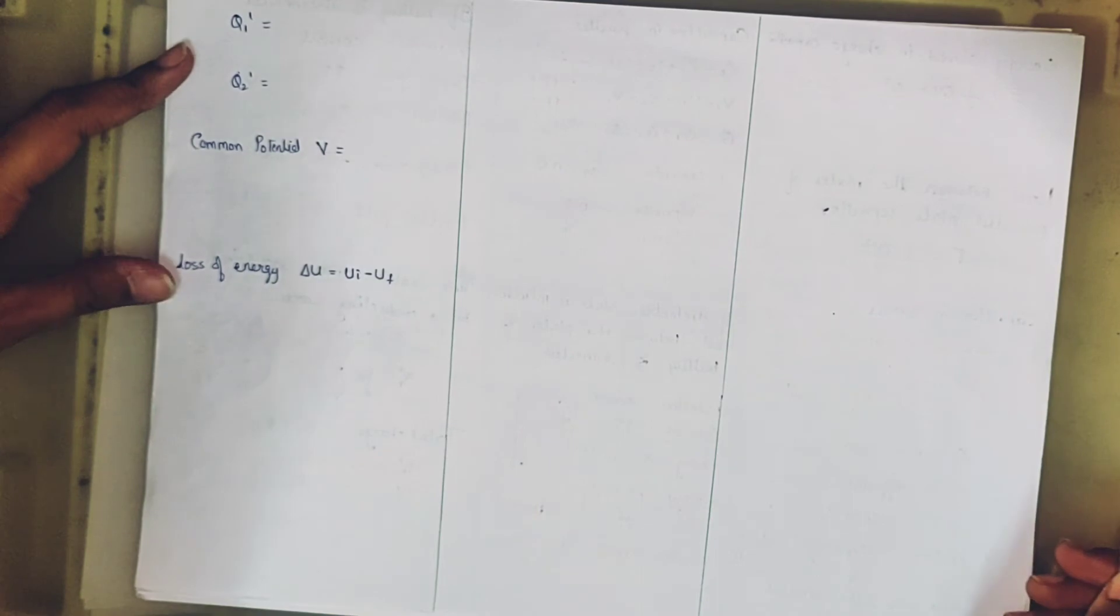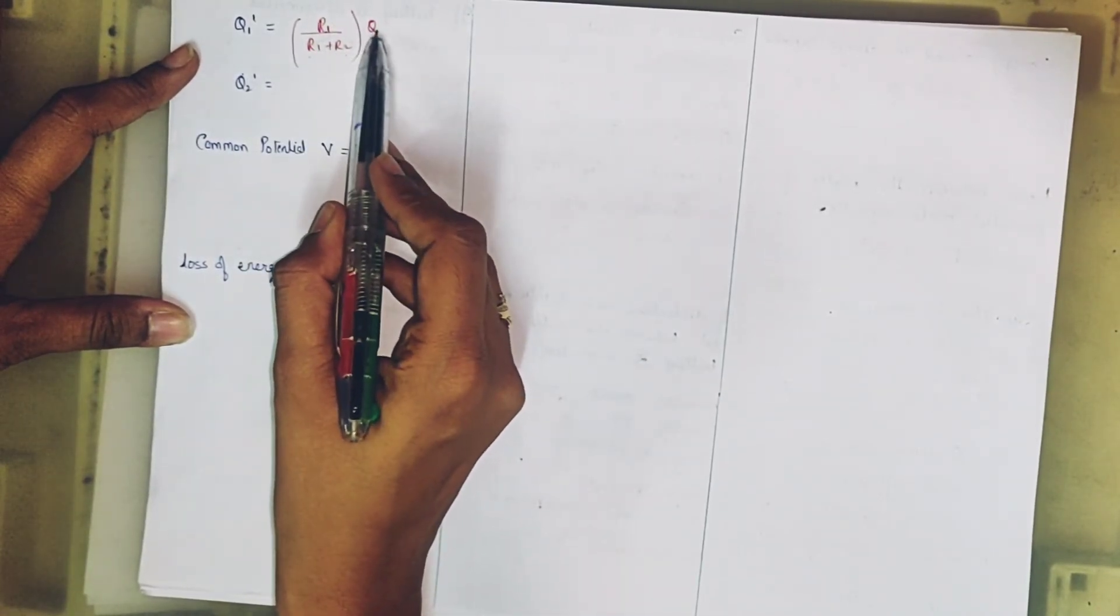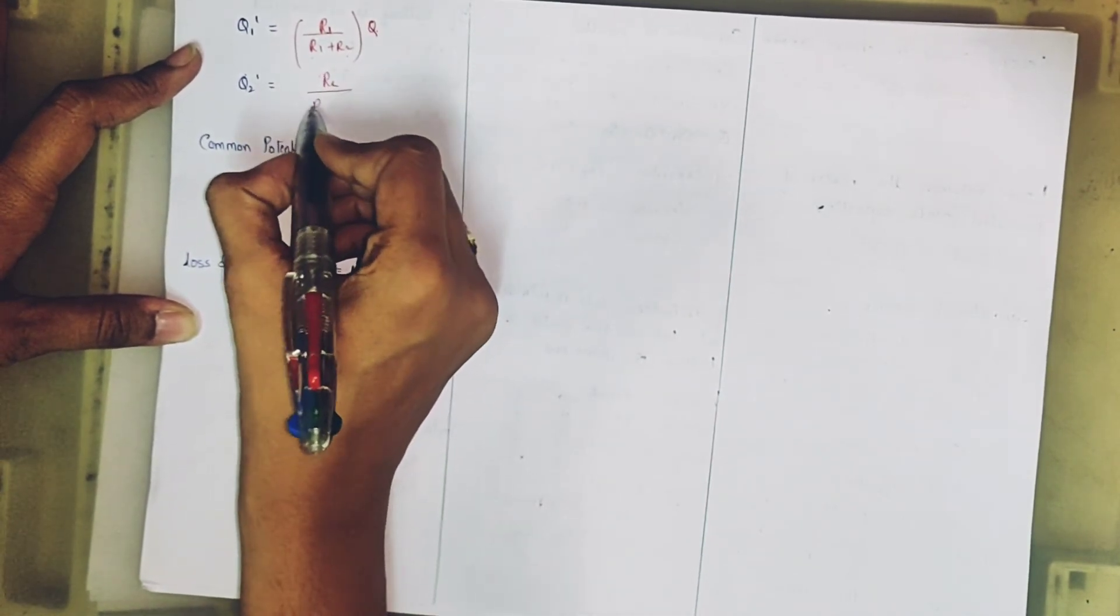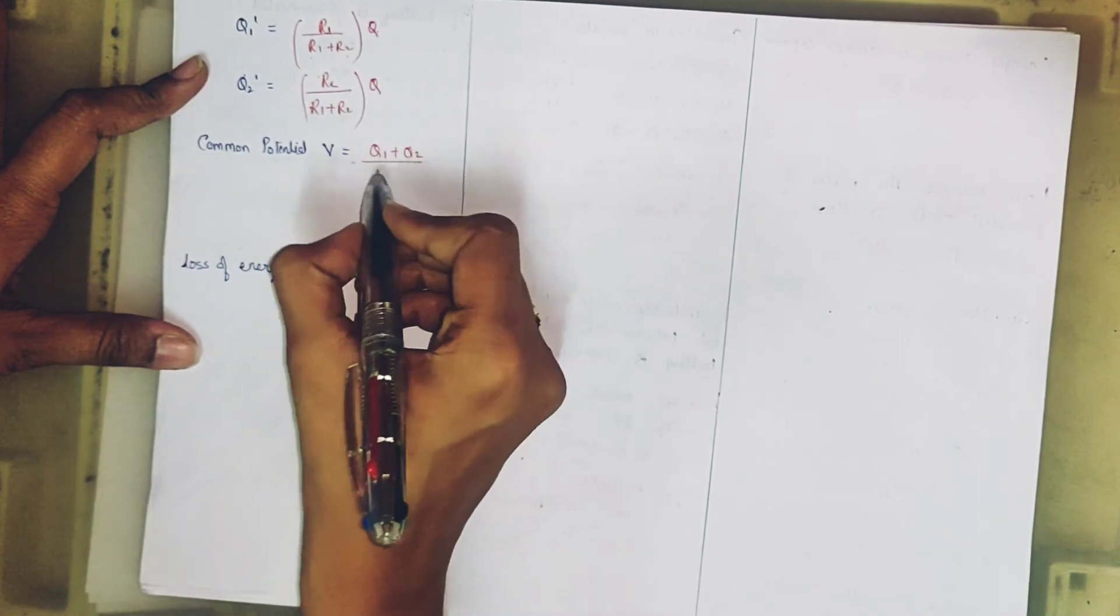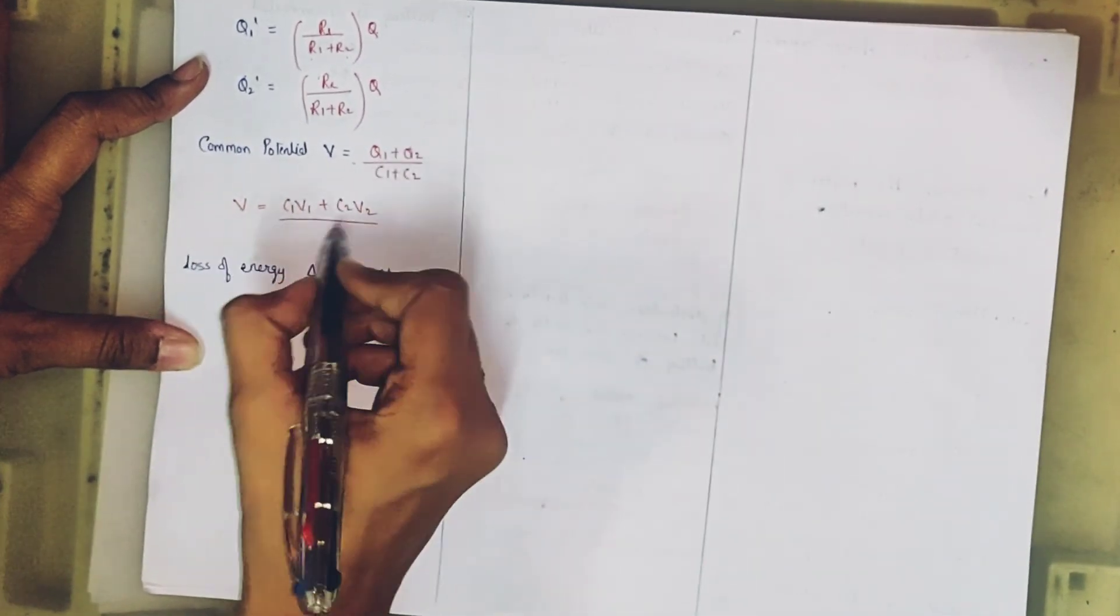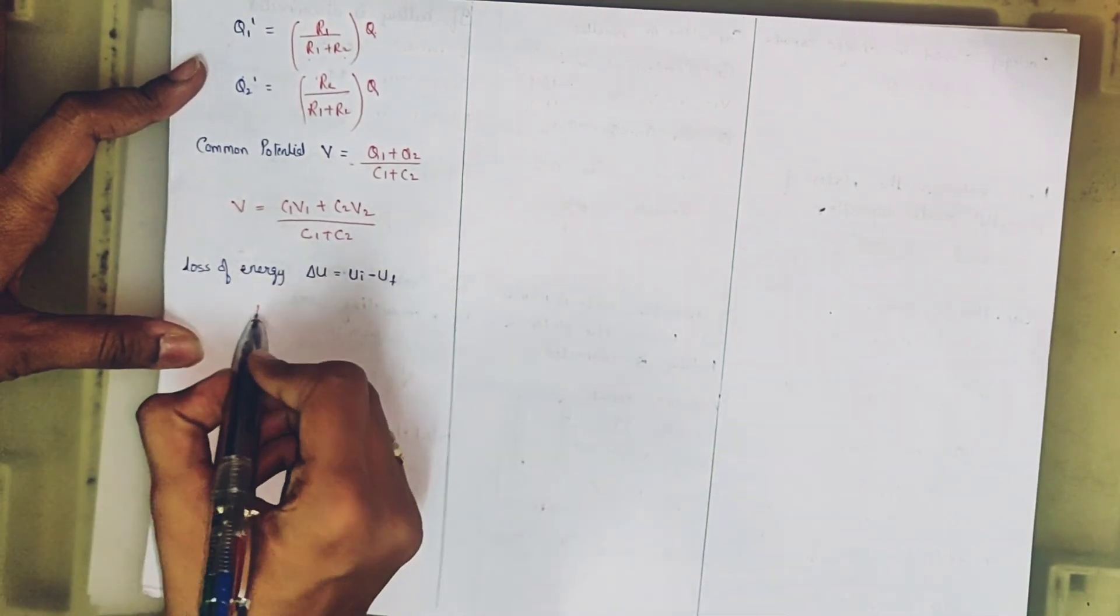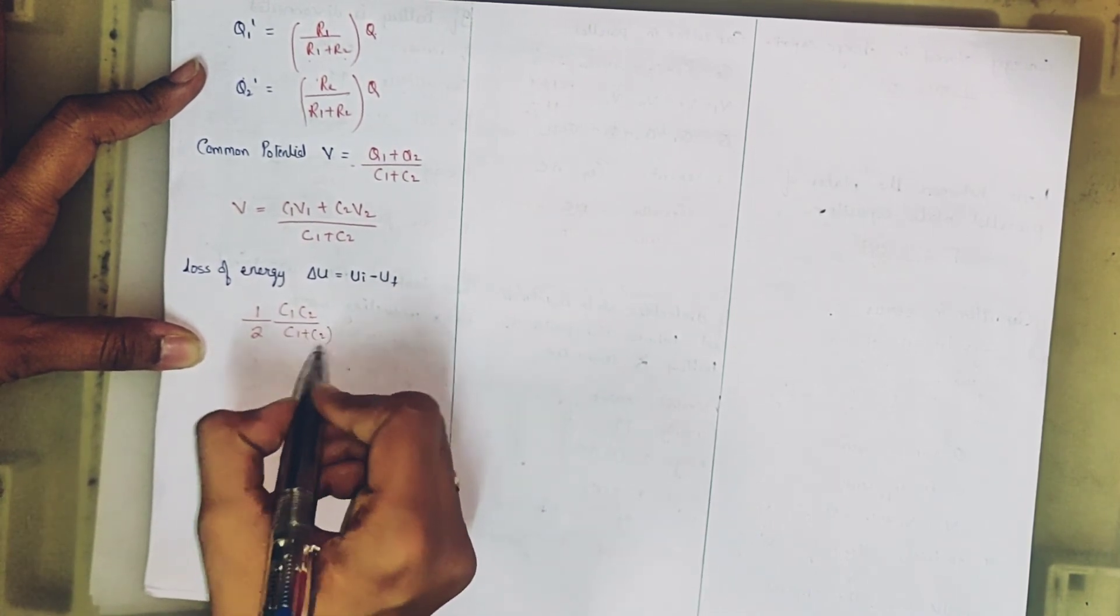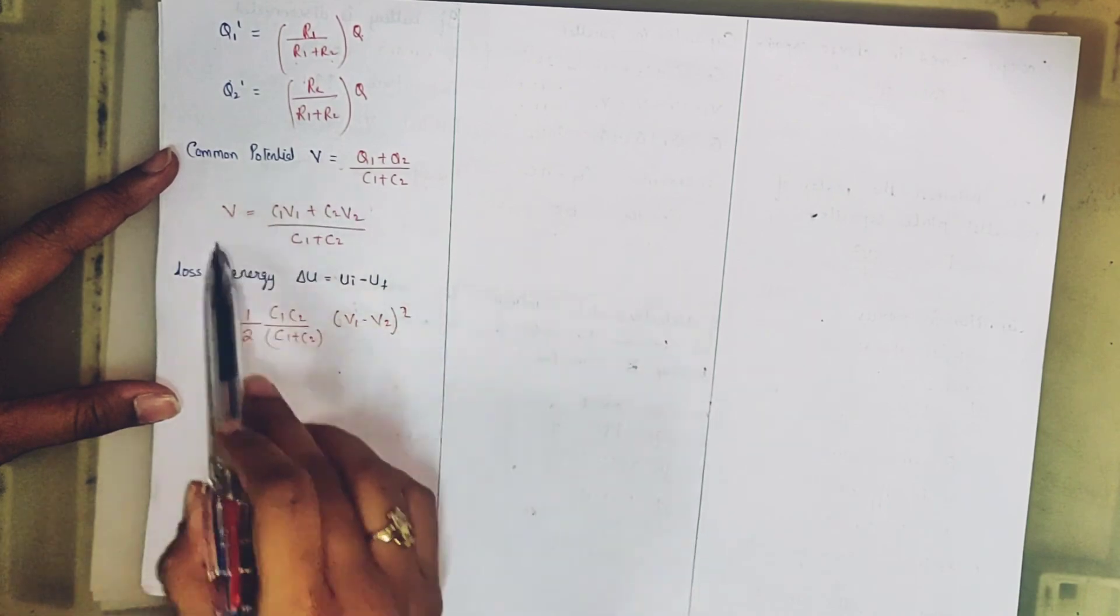After that, if they directly ask you what is the charge of the first body afterwards? Q1 dash, remember this formula: R1 upon R1 plus R2 into Q, that is the total charge. Radius of first body upon total radius of both bodies into the charge. Next, Q2 dash, in exactly the same way R2 upon R1 plus R2 into Q. After that, the common potential of both will be Q1 plus Q2 divide by C1 plus C2. Or we can write another formula: V equals C1 V1 plus C2 V2 by C1 plus C2. I will not tell you how this is derived, you just remember this is our result, direct formulas for use. After that, difference in the energy, you also have to remember one last formula: half C1 C2 by C1 plus C2 into V1 minus V2 whole square. I have given you two extra formulas here. Sometimes they ask these.